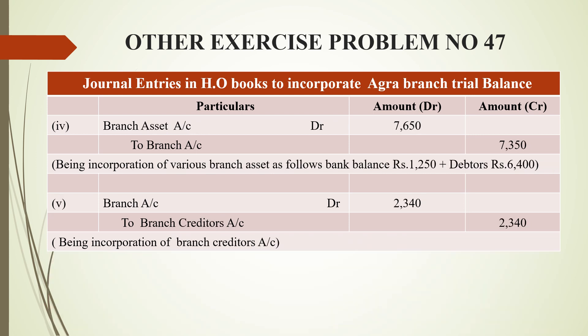The fourth entry transfers branch assets to the head office at year end. Branch asset account is debited and branch account is credited — assets have gone out from the branch and are entering into the head office books.